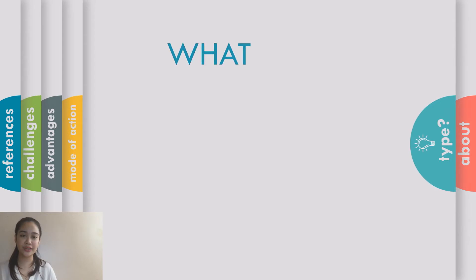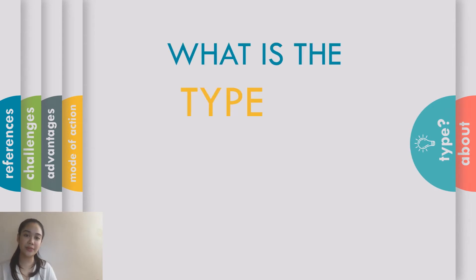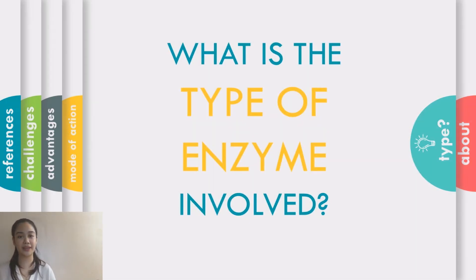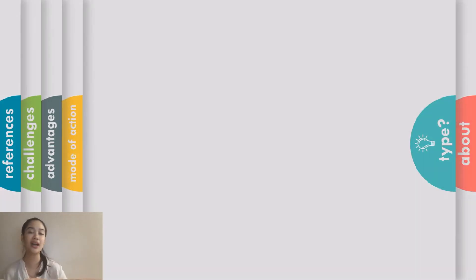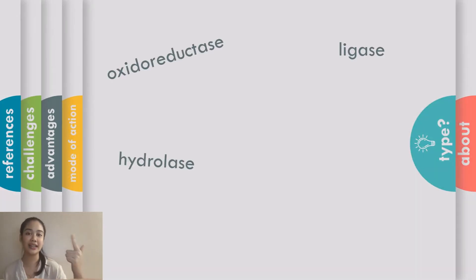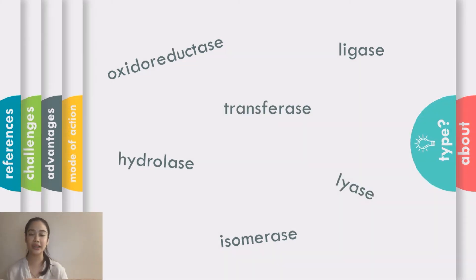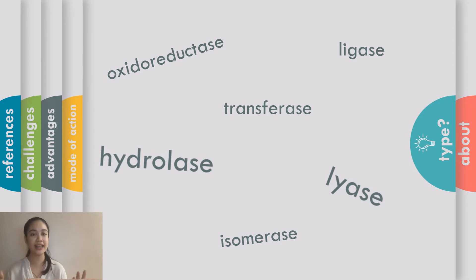Hello, my name is Shania Jordan-Justine and today I'll be presenting about the types of enzyme used in fruit juice making. Basically, there are six types of enzymes: oxidoreductase, ligase, hydrolase, transferase, lyase, and isomerase. The enzymes used in this case fall under hydrolase and lyase. Hydrolase and lyase both break chemical bonds but in different manners — hydrolase requires water while lyase breaks the bond through an elimination reaction.